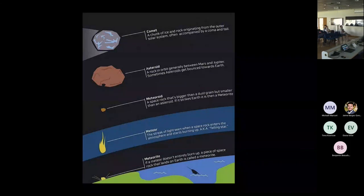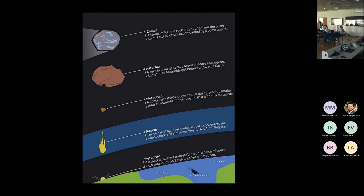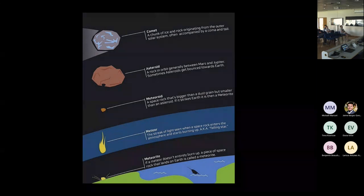Before going further, I'd like to clarify a few definitions about small bodies: what's the difference between a comet, an asteroid, a meteoroid, a meteor, and a meteorite?